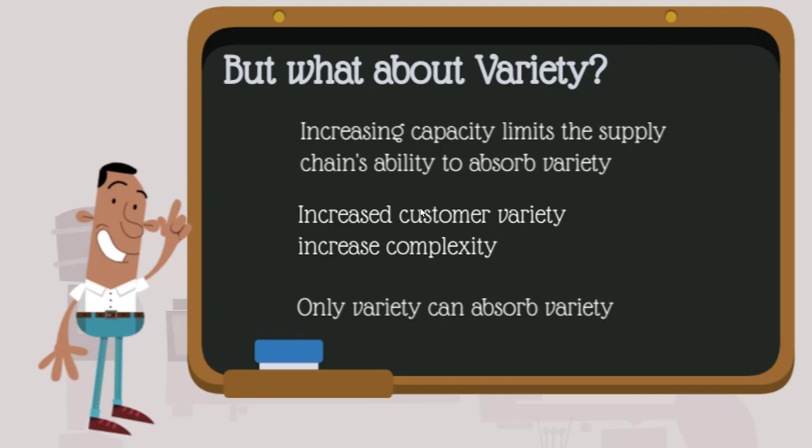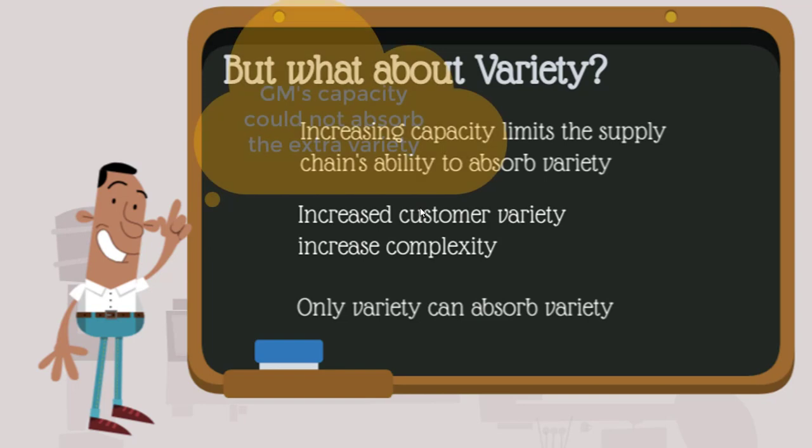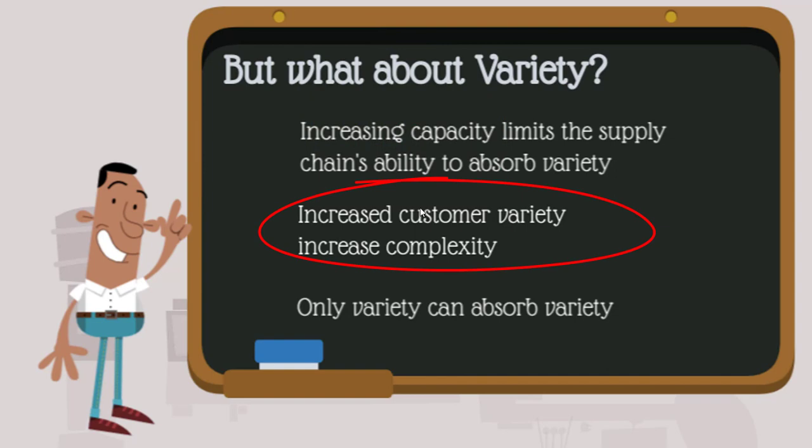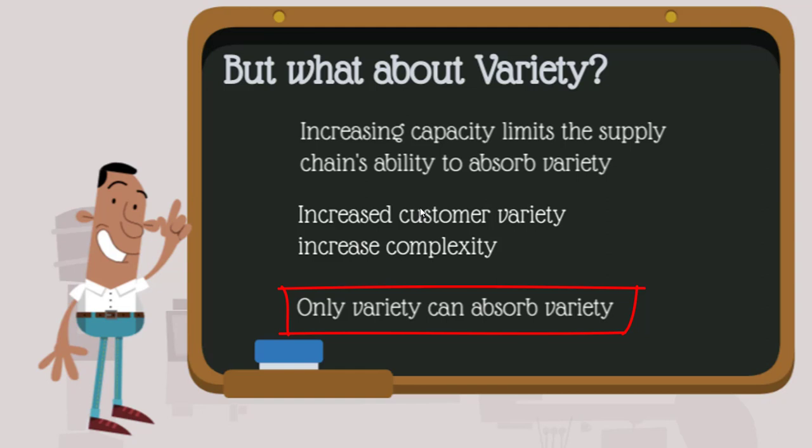Take for instance when General Motors increased capacity in the 80s and 90s to build more cars — their capacity was unable to address the fact that they had too many product lines. As a result, they had too much variety for the capacity to absorb, and they ended up generally having more capacity than they needed even though they did have a lot of variety in their supply chain. Increased customer variety also increases the complexity of the supply chain. When you increase the number of product lines, you multiply the complexity of the supply chain by that factor.